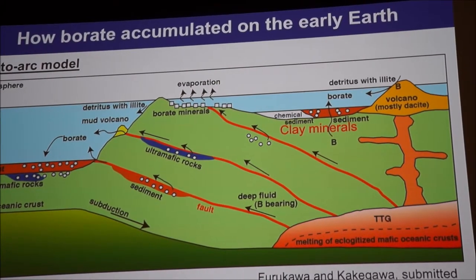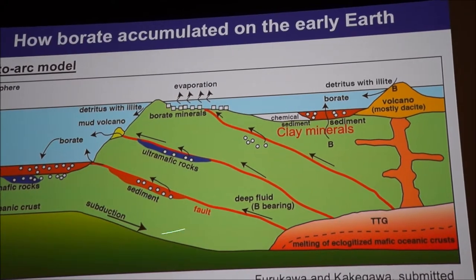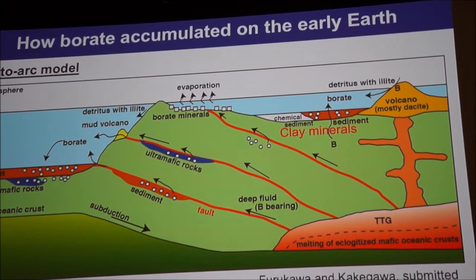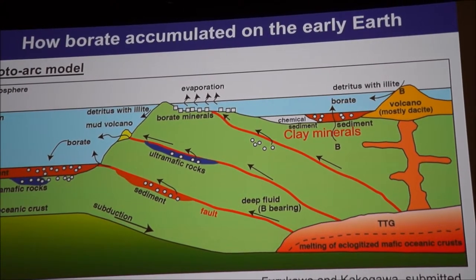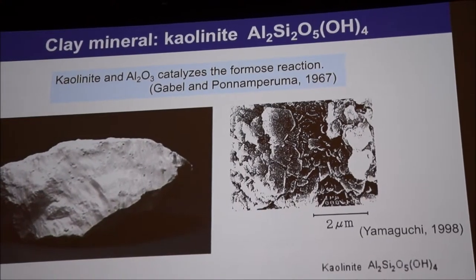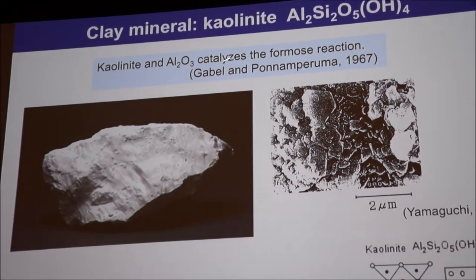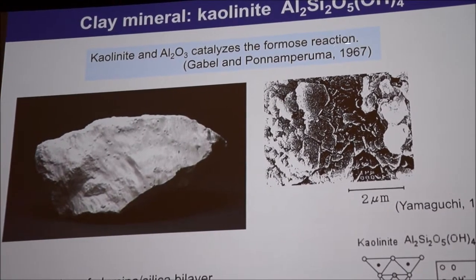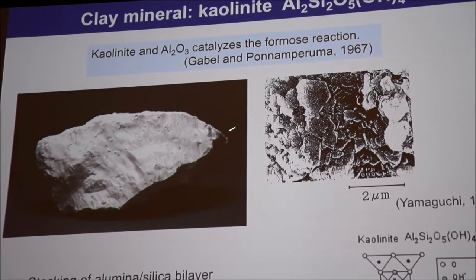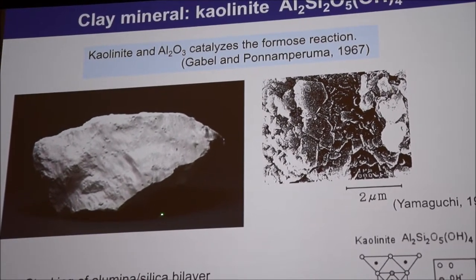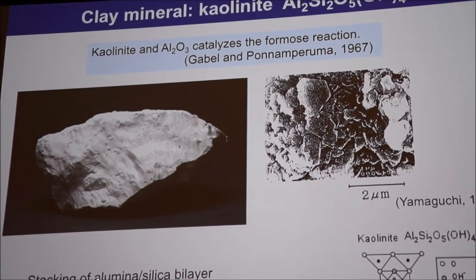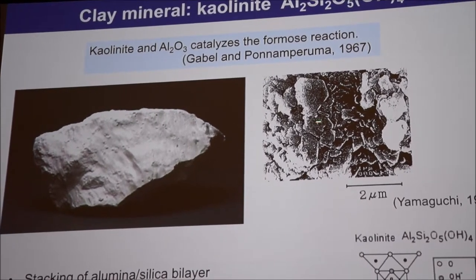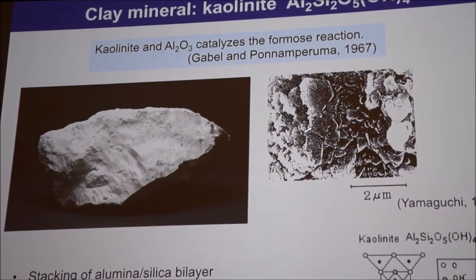But what about silicate minerals? Silicate minerals are always present around the proto-ocean and on the surface of the Earth, and it is not clear whether silicate minerals help or disrupt the borate-mediated stabilization of ribose. Kaolinite is a clay aluminosilicate mineral. Kaolinite is known to catalyze the formose reaction — this was proposed in 1967, though at that time the products were not analyzed in detail. Kaolinite is composed of bilayer stacking of alumina and silica sheets, and its surface charge is negative under neutral and high pH. This is an SEM image of the kaolinite particle.